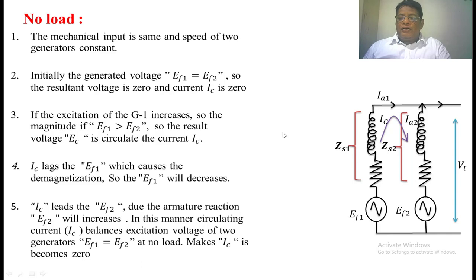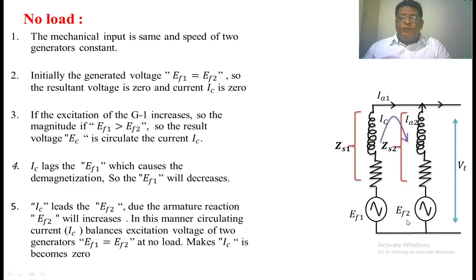At no load, we assume that EF1 is equal to EF2. There is no resultant voltage in the loop. The circulating current will also become zero.